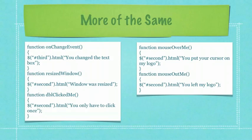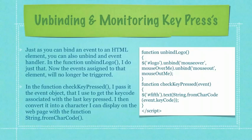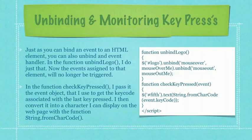You can see here I'm running pretty much identically the same code where I am posting text to either the paragraph named 'third' or the paragraph named 'second'. Just as you can bind an event to an HTML element, you can also unbind an event handler. In the function unbindLogo, I do just that — now the events assigned to that element will no longer be triggered. In the function checkKeyPressed, I pass it the event object that I use to get the key code associated with the last key pressed on the keyboard. I then convert it into a character I can display on the webpage with the function String.fromCharCode.